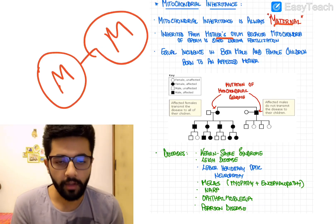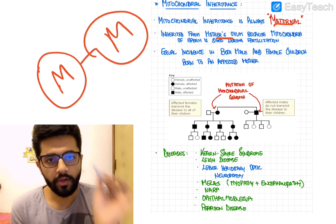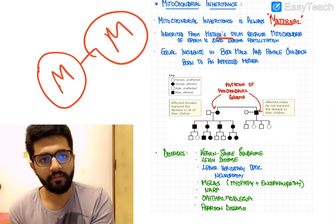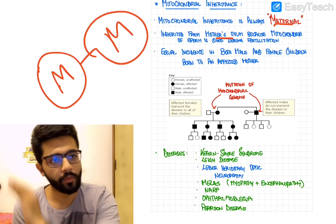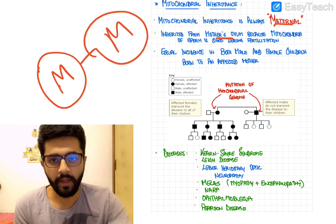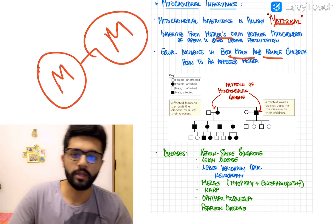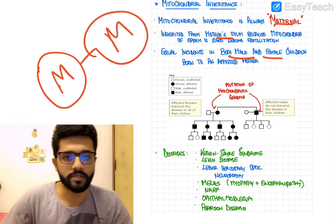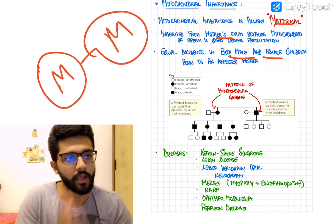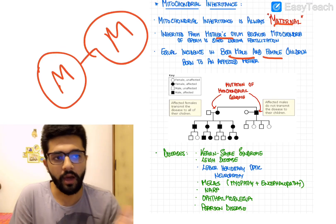In mitochondrial diseases, all children born to an affected mother will also be affected, irrespective of whether the child is male or female. This differs from X-linked recessive diseases, which are more predisposed to males. In mitochondrial inheritance, all children from an affected mother are affected.